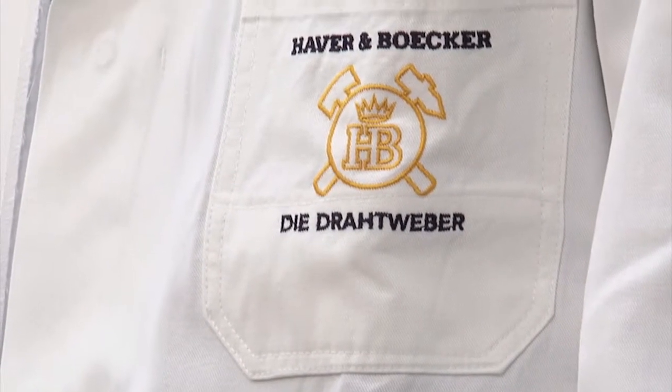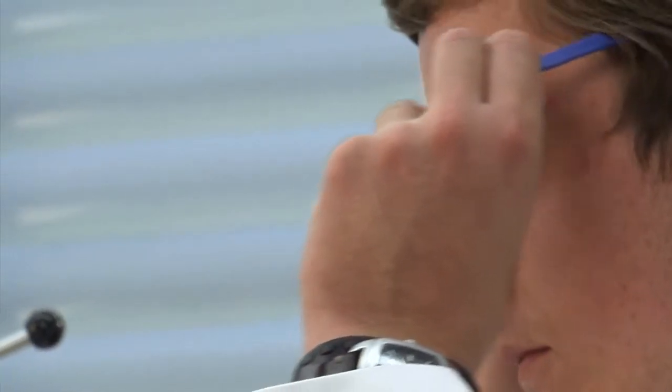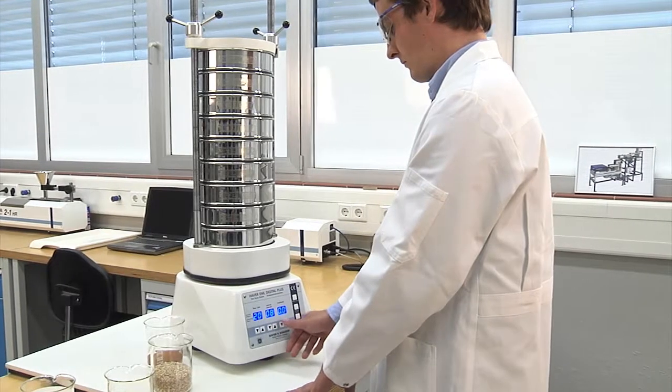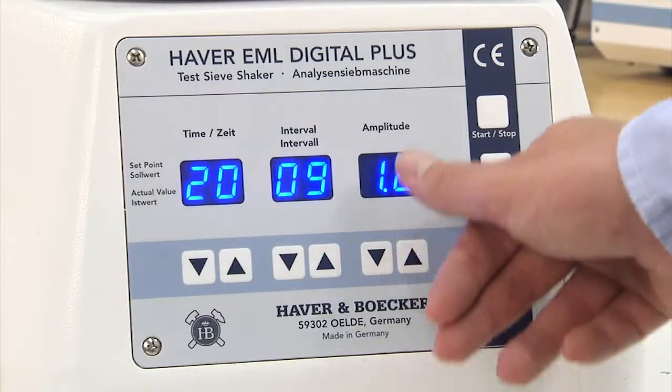In the past, difficult three-dimensional hot manual labor was necessary for gold washing. Today it's performed automatically, and it's real easy with a Hover range of EML test sieve shakers.